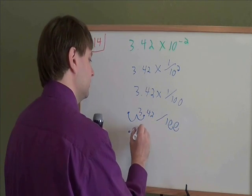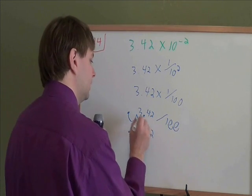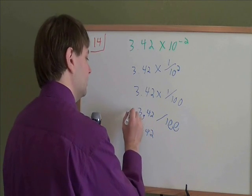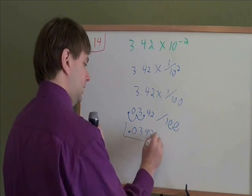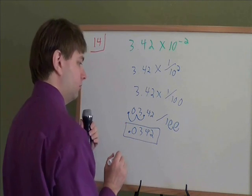We get decimal 0, 3, 4, 2. If your decimal moves over an empty spot, it gets a zero. And that's your answer, 0.0342.